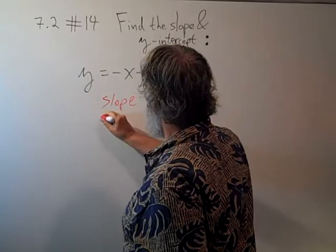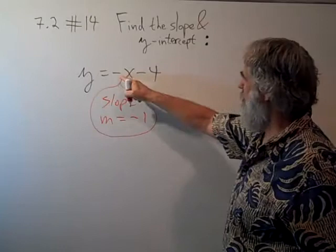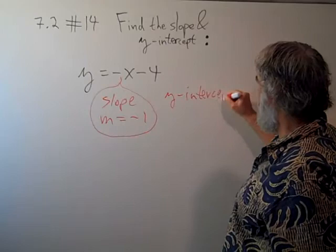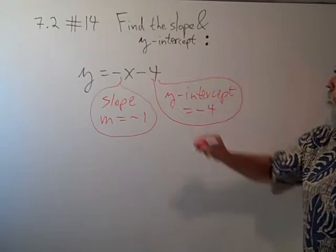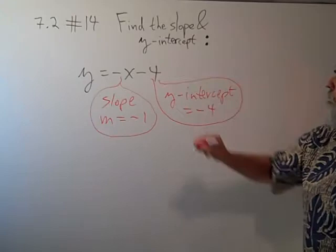So in this case, the slope, which we use the letter M for, is equal to negative 1, because it's negative 1 times x. And the y-intercept is equal to negative 4, because that's the constant term of this linear polynomial. So this line has a slope of negative 1 and a y-intercept of negative 4.